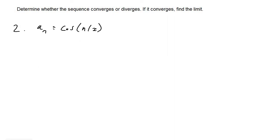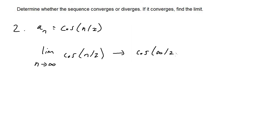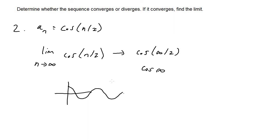For number two, a_sub_n equals cosine of n divided by 2. Taking the limit as n approaches infinity: infinity over 2 is still infinity, giving cosine of infinity. Since cosine is an oscillating function, we can't determine its limit at infinity. Whenever we have cosine of infinity or sine of infinity, the sequence diverges.